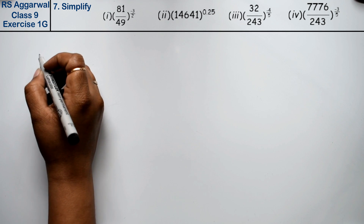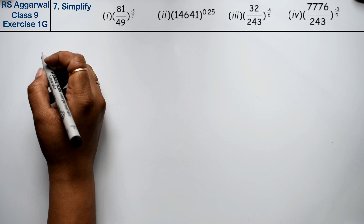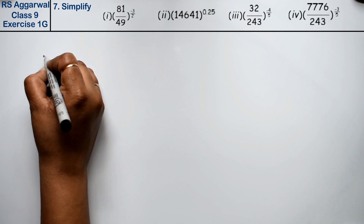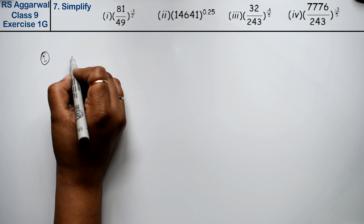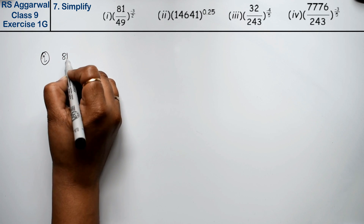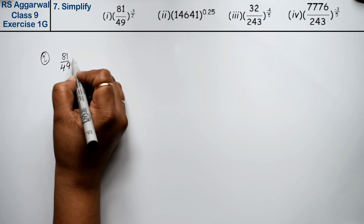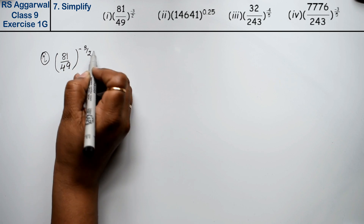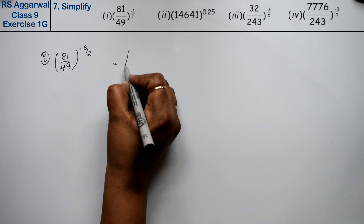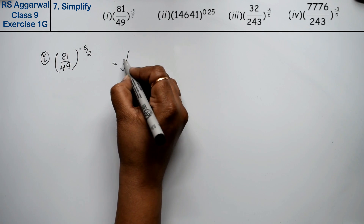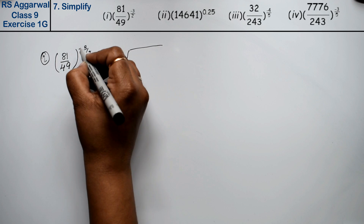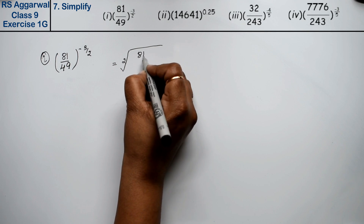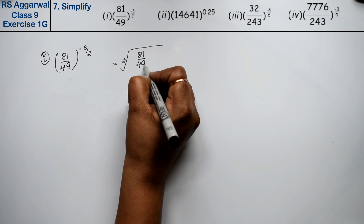Let's do question number 7 of Exercise 1G, that is Number System. Question number 7: simplify. First part is 81 upon 49 to the power minus 3 upon 2. The denominator 2 means square root, and 81 upon 49 to the power.